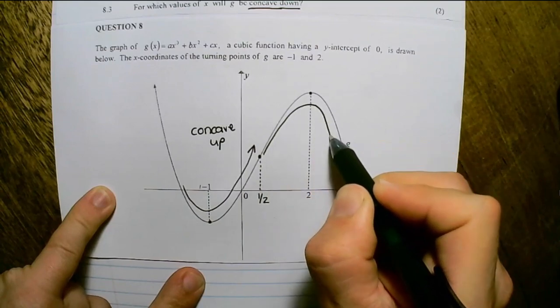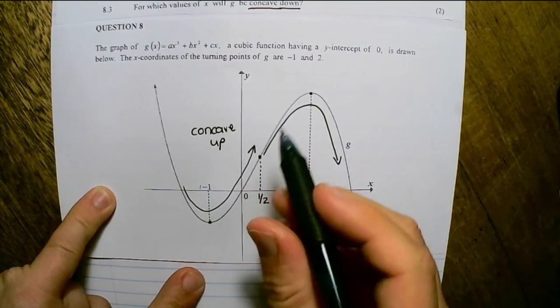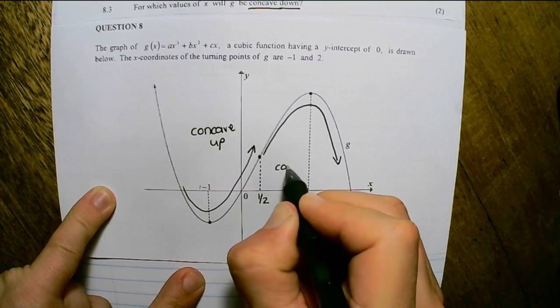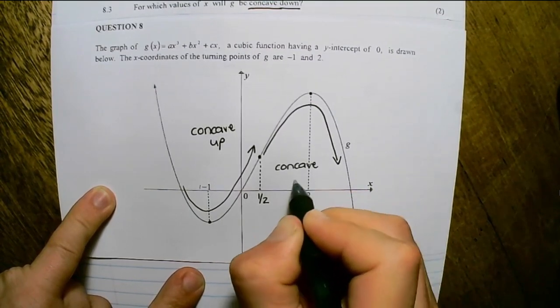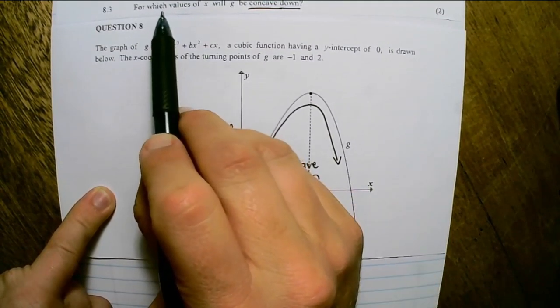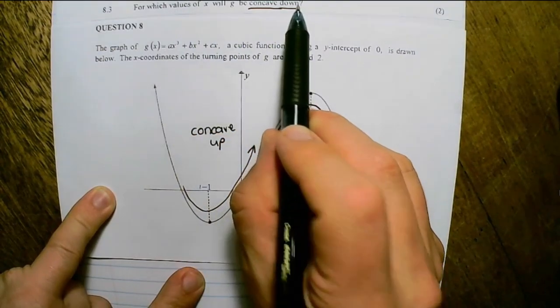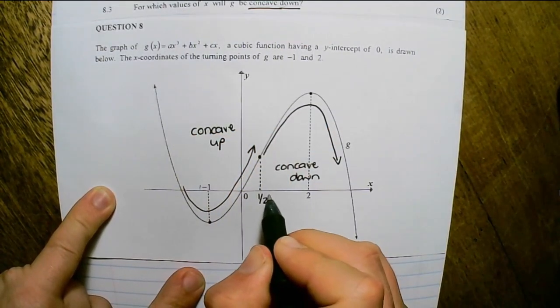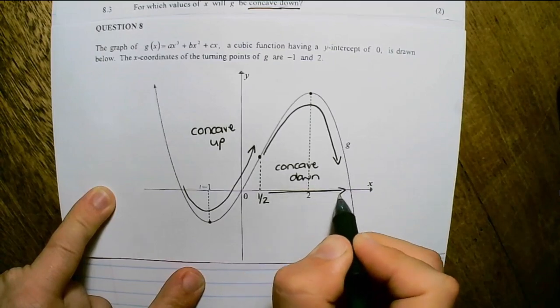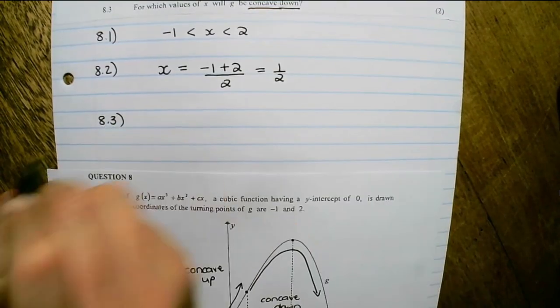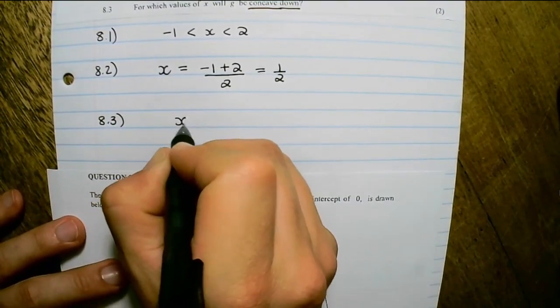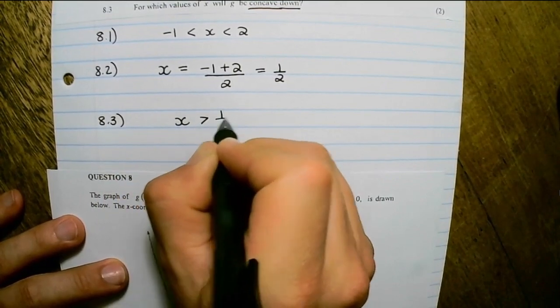I see the graph will move downwards eventually. So this is concave down. So the graph is concave down from x equals one half moving towards the right. And the way we write that is x must be bigger than one half.